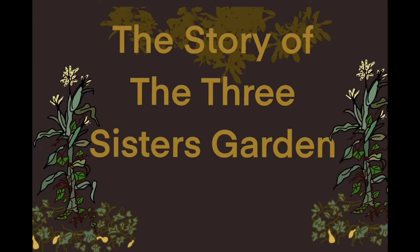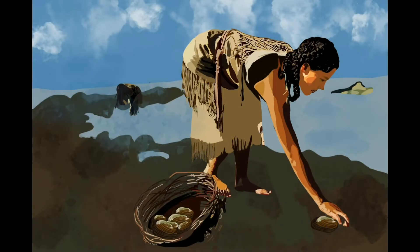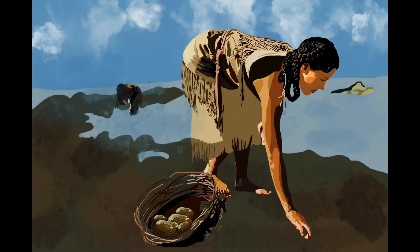The Story of the Three Sisters' Garden. Before settlers from Europe and other countries came to the Americas, indigenous or native people lived on the land for thousands of years. They were prosperous and very good hunters, gatherers, and agriculturalists or farmers.